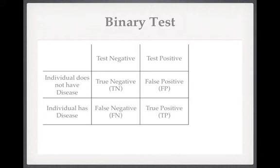Now this may well not be the first time that you've seen this 2x2 table, but it describes all of the scenarios when we're testing a patient for a disease using a binary test. If the individual doesn't have the disease and tests negative, that's a true negative result. If they do not have the disease but test positive for it, that's called a false positive. If they do have the disease but test negative for it, that's a false negative. And if they do have the disease and test positive, that's a true positive. Now we can think about the test in terms of its sensitivity and specificity, and its positive and negative predictive value.